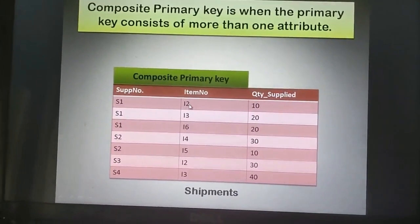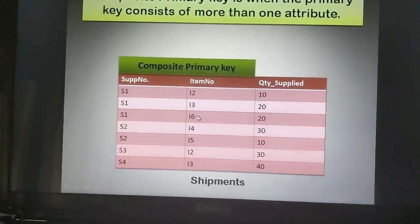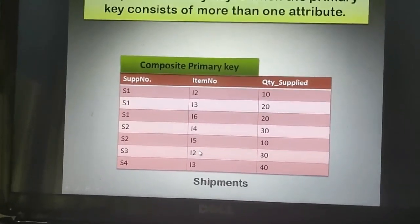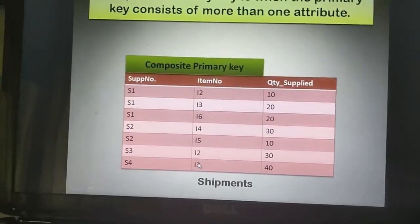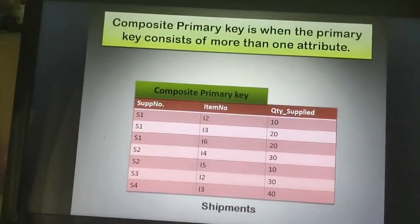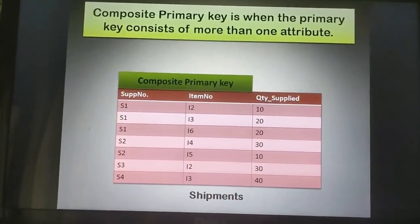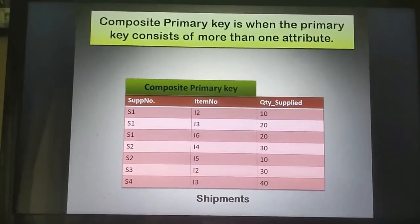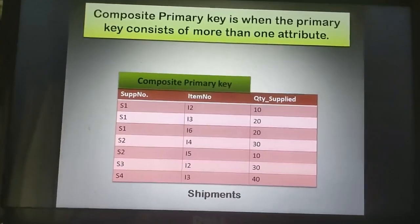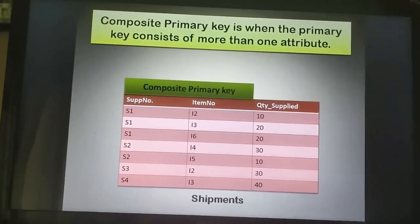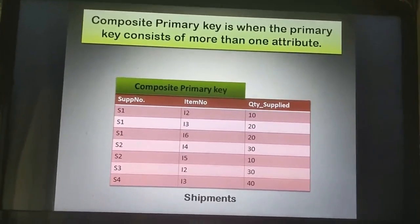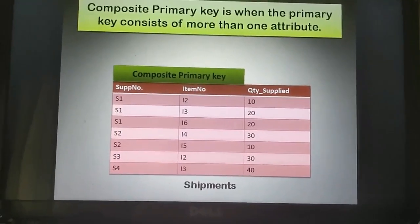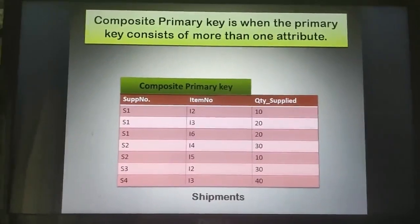If we see the combination of supplier number and item number — s1-i2, s1-i3, s1-i6, s2-i4, s2-i5, s3-i2, s4-i3 — we will see that the combination is unique. In this kind of situation, where a combination of two attributes forms a unique primary key, it is called a composite primary key. Composite primary key is when the primary key consists of more than one attribute. Here, the composite primary key is supplier number and item number, as indicated through the green box.